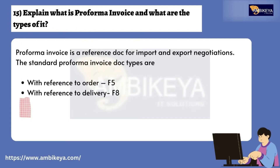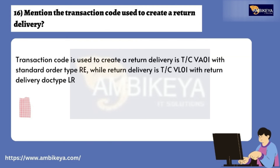Question number fifteen: Explain what a Proforma Invoice is and what are its types. A Proforma Invoice is a reference document used for import and export negotiations. The standard Proforma Invoice document types are: F5 (with reference to order) and F8 (with reference to delivery).